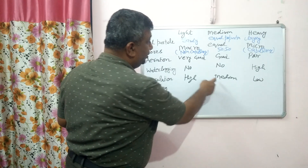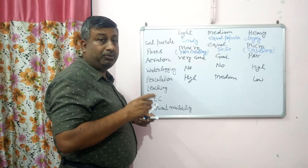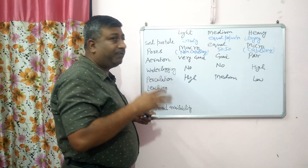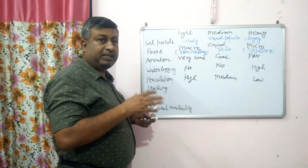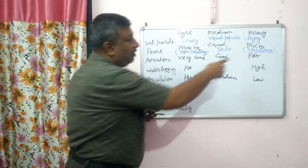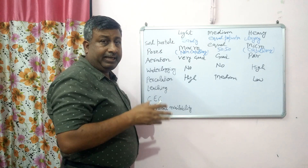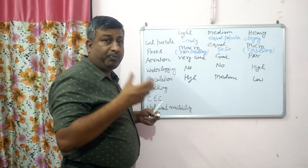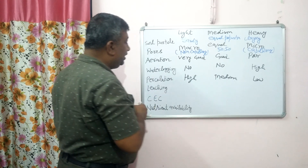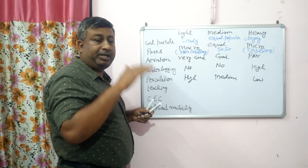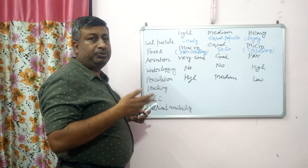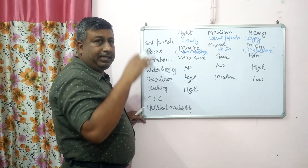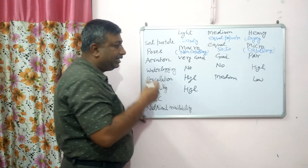Medium textured soil is very good because it maintains water availability through capillary pores and also maintains root respiration through non-capillary pores. In light textured soil, macro pores are more so root respiration is good but water availability is poor. In heavy textured soil, air circulation is very poor, so root growth and root respiration are poor, but water is available for a longer period. Leaching is associated with percolation — when nutrients move downward with percolating water it is termed leaching. Leaching is high in light textured soil, so whatever nutrients are applied through fertilizer are leached down, making soil fertility poor.